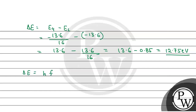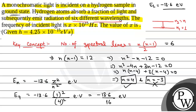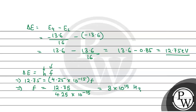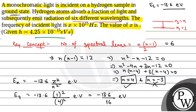Using delta E equal to h into f, where h is Planck's constant and f is frequency: 12.75 is equal to 4.25 into 10 to the power minus 15 into f. From here, f is equal to 12.75 by 4.25 into 10 to the power minus 15, which equals 3 into 10 to the power 15 hertz. Since frequency is given as x into 10 to the power 15 hertz, x is equal to 3. The final answer is x equal to 3. Hope you all understood it well, best of luck.